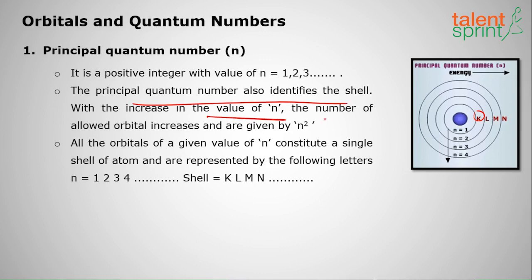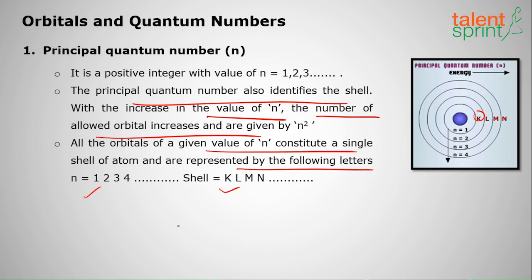With the increase in the value of n, the number of orbitals increases and is given by n squared. All the orbitals of a given value of n constitute a single shell, represented by the letters: n equal to 1 is the K shell, 2 is the L shell, 3 is the M shell, and 4 is the N shell.